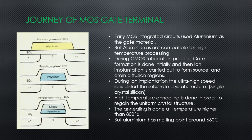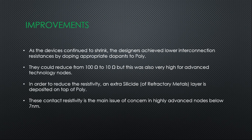The silicide layer can be seen in the figure, showing how polysilicon and silicide are deposited. Contact resistivity is the main issue of concern in highly advanced nodes below 7 nanometers today.